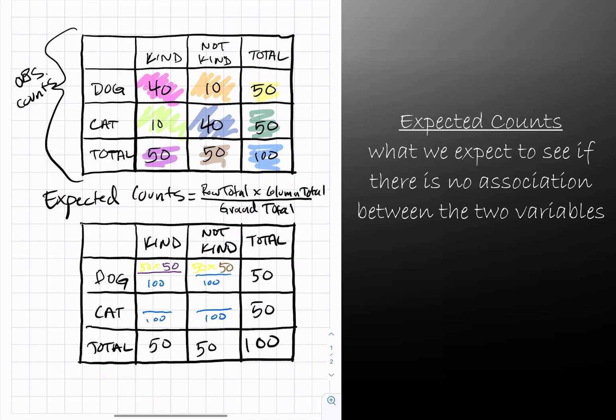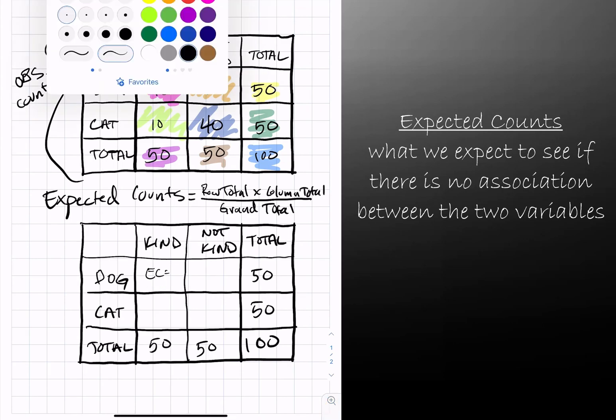Again, you can see that all of them have that blue denominator. Here a dog that's not kind still has 50, the yellow row total, and now it's moved 50 to the brown which is the column total for that cell. For cats, they'll both have 50 as their row total from the green, but they would have a different column total because they're in different columns.